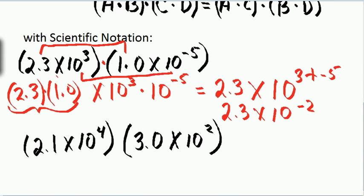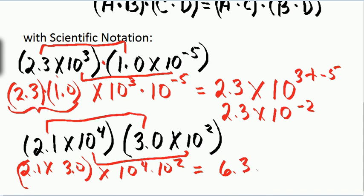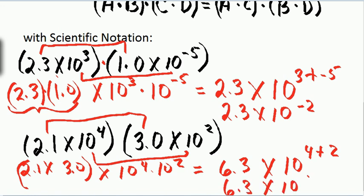Our last example using the associative property with scientific notation. I rearrange and combine: 2.1 times 3.0, then times 10 to the 4th times 10 squared. That gives me 6.3 times 10 to the 4 plus 2, so I end up with 6.3 times 10 to the 6th.